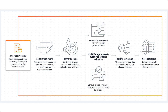Let's take a look at how it actually works. The Audit Manager continuously audits your AWS usage to simplify how you assess risk and help you with compliance. First is selecting a framework — you can select from a pre-built framework which includes controls, or you can create your own custom framework and define your parameters.